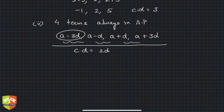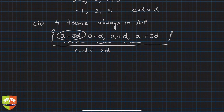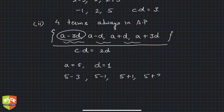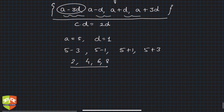So if a problem requires four terms in AP, instead of taking them as a, a+d, a+2d, a+3d, you can take a minus 3d, a minus d, a plus d, and a plus 3d. For example, let a equal 5 and d equal 1. Then the terms are 5 minus 3, 5 minus 1, 5 plus 1, and 5 plus 3 — that is, 2, 4, 6, and 8 — which are clearly in AP. Whatever the values of a and d, they will always be in AP.